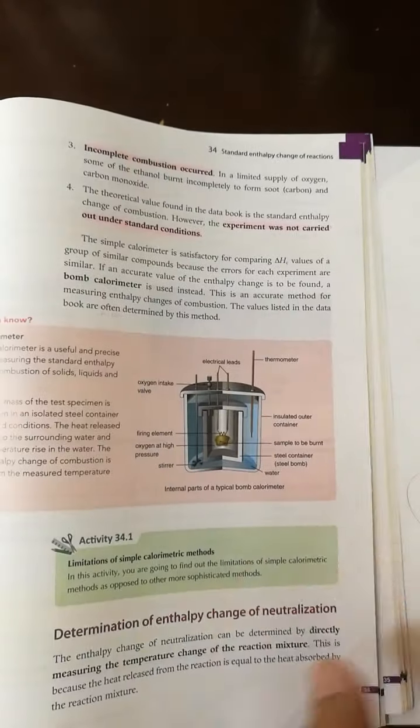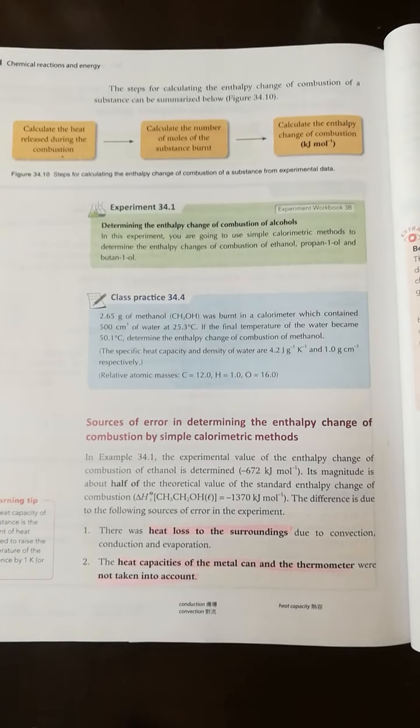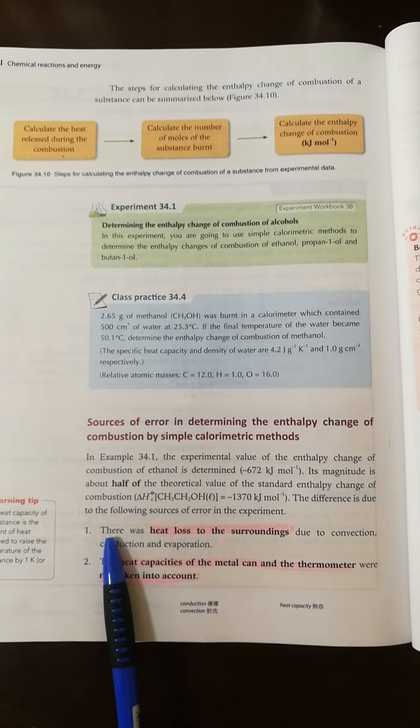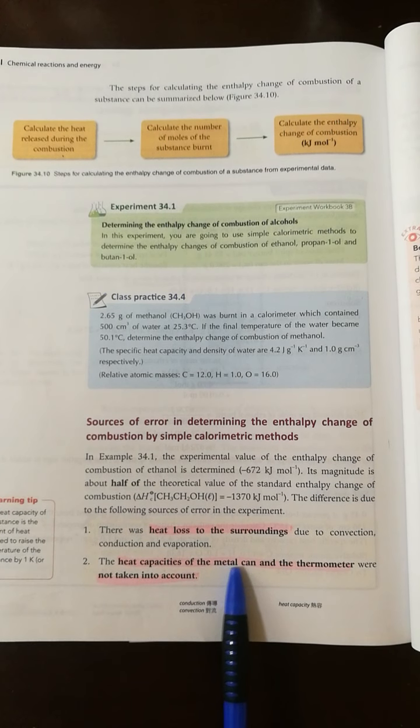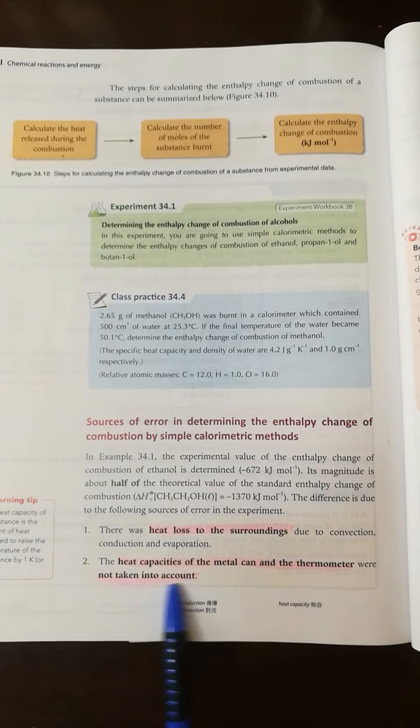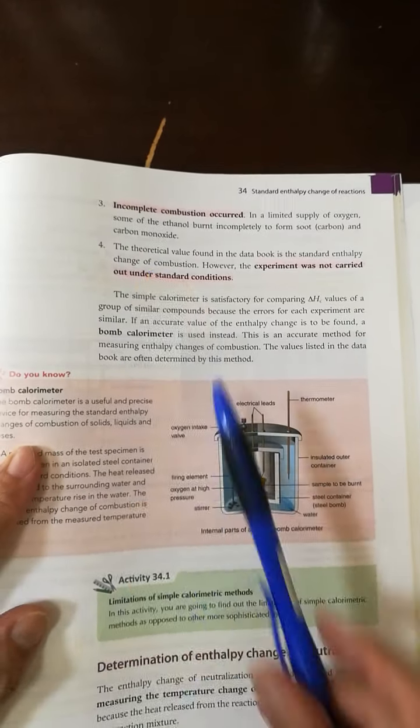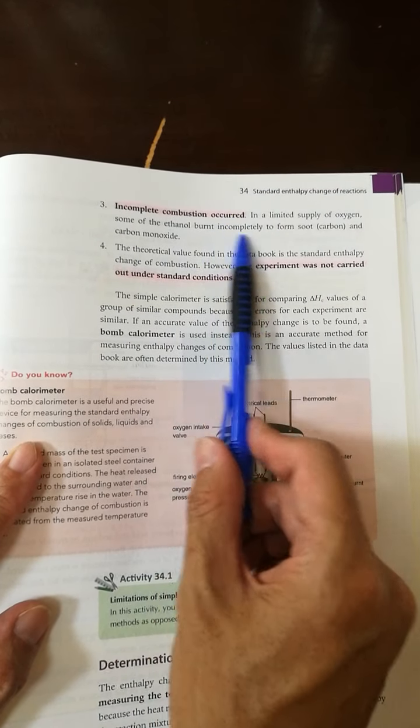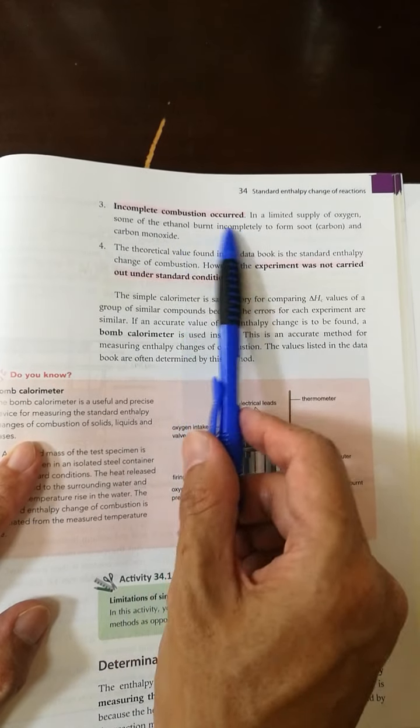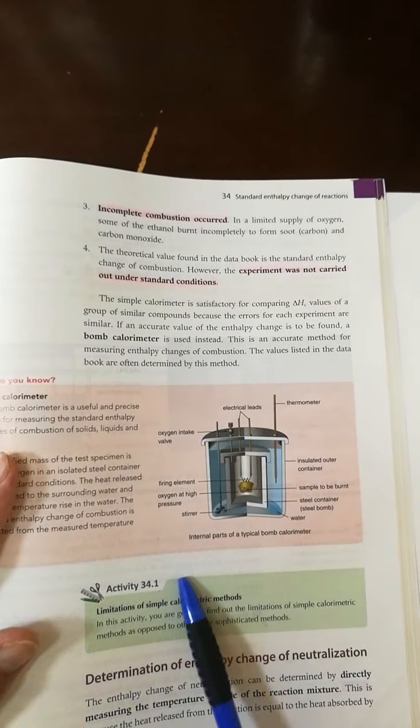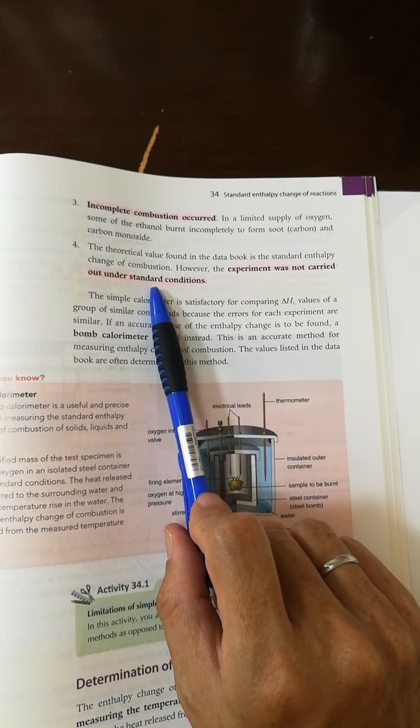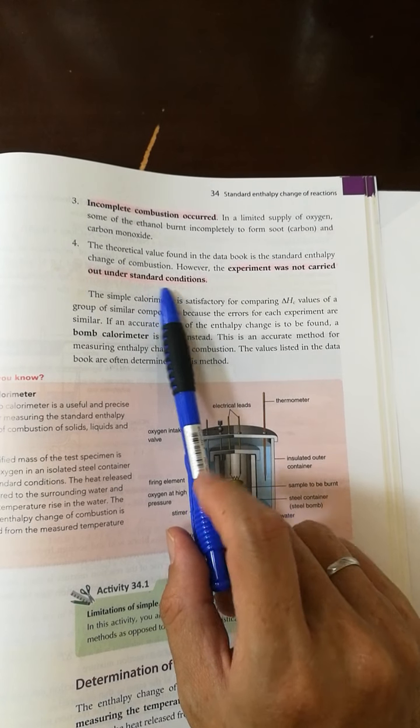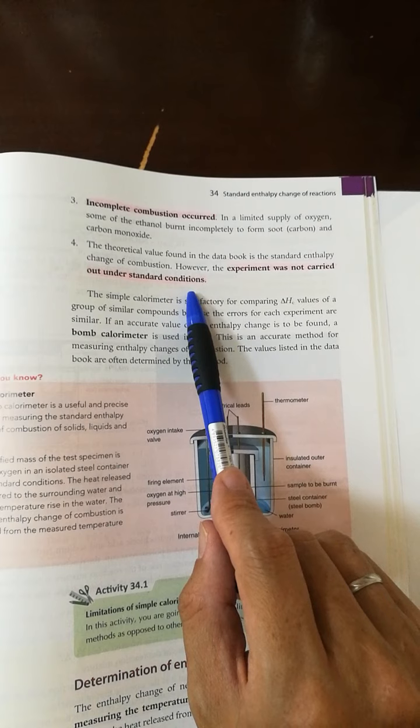So the assumptions made here are: we know that heat is lost to surroundings, and the metal can and thermometer heat capacity should be taken into account, and incomplete combustion may occur, and they give an error. And also, the conditions - is it equal to 25 degrees Celsius and 1 atm? If not, it is not a standard condition.